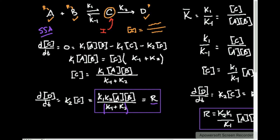The steady state approximation assumes one major thing: that the change in the intermediate's concentration with respect to time is zero. The closer that change is to zero, the more accurate the steady state approximation is. But in some reactions, maybe the change in the intermediate is not zero — it could be negative or positive. So then maybe the steady state approximation isn't exactly the most accurate method, and maybe we should choose something else.